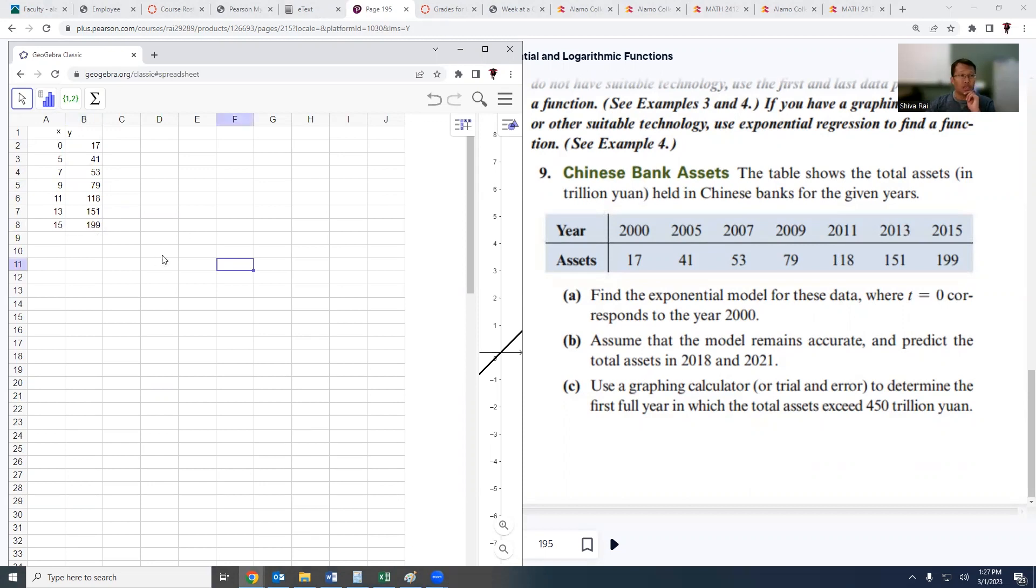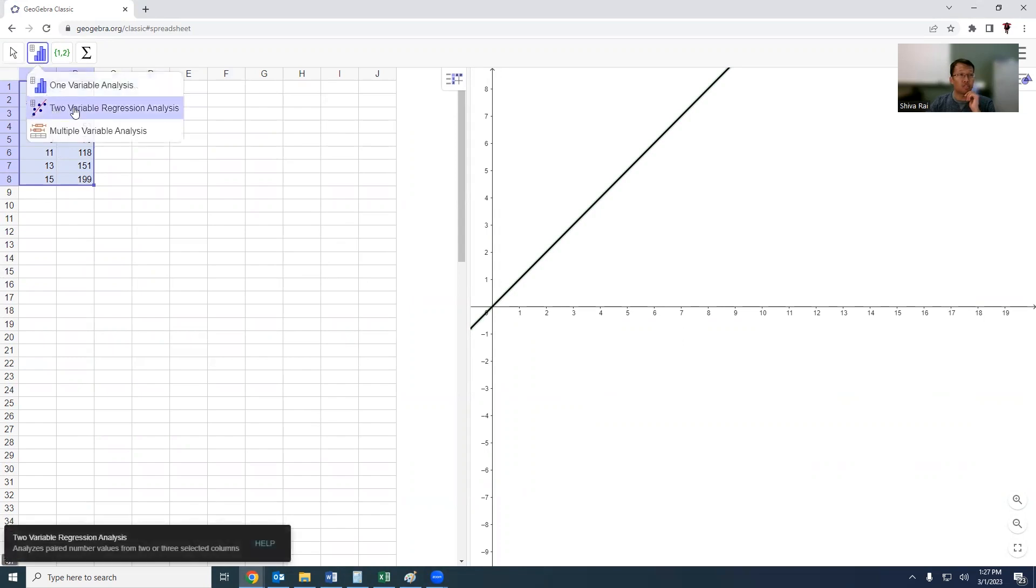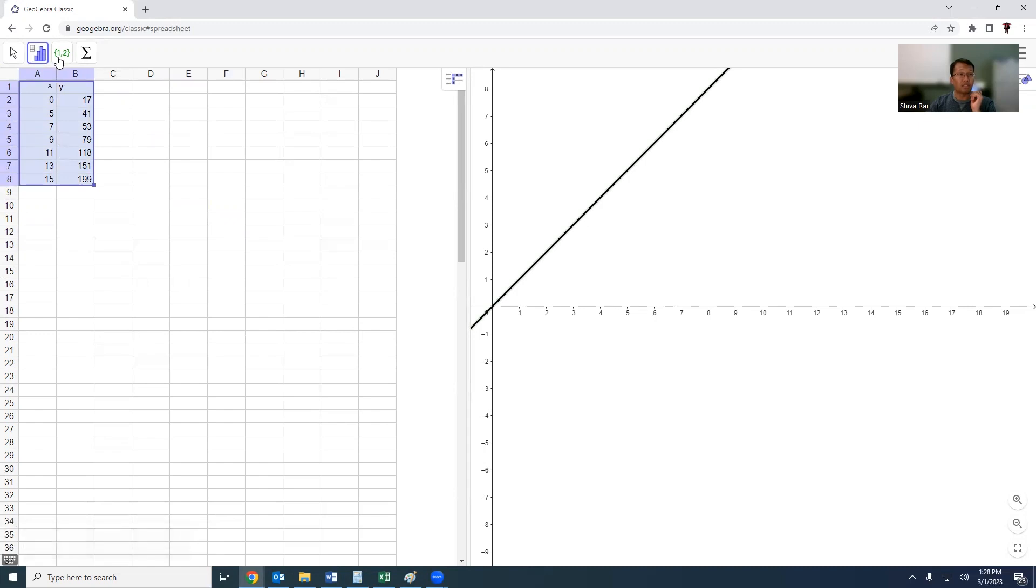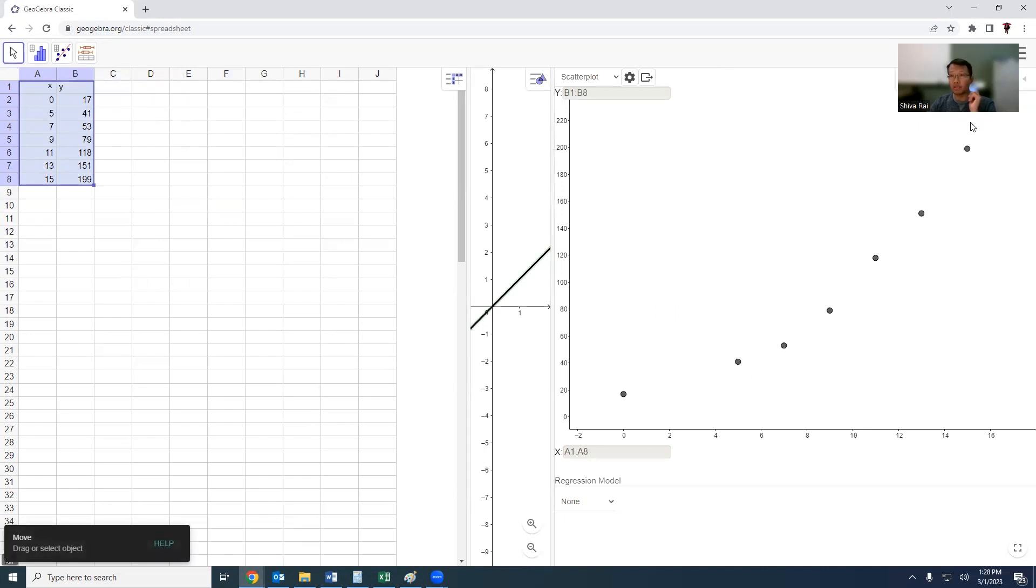Once you do that, then we need to select all of this data. Click on this histogram-like thing and choose the two variable regression analysis. Then you get this scatter plot.